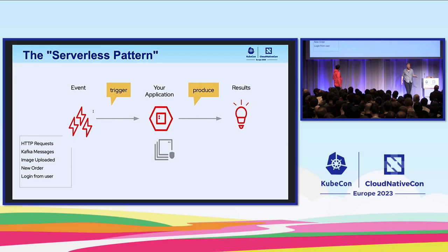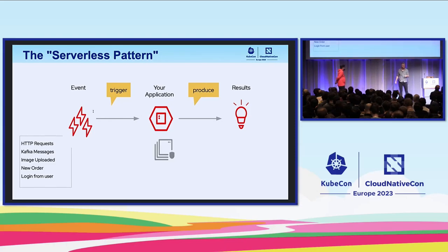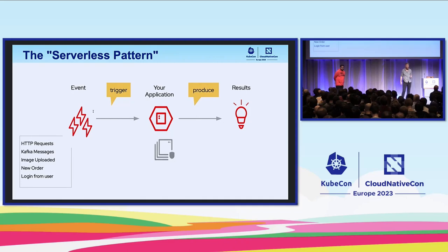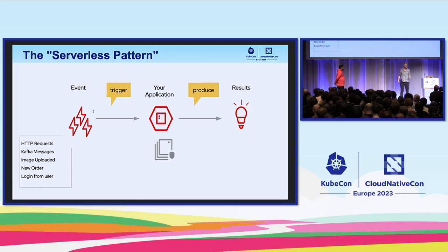Let me explain more with the serverless pattern. On the left-hand side you have an event — it could be an HTTP request, a Kafka message, or some other event. This event triggers our application, which does some work and produces results. Once the job is done the application scales in, and if there are more requests it scales out. That's serverless in a nutshell.